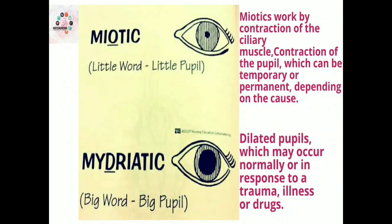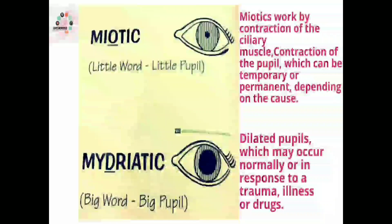Next we have miotic and mydriatic — two chemical substances. Miotic means little pupil; it works by contraction of the ciliary muscle and contraction of the pupil, which can be temporary or permanent depending on the cause. Mydriatic, also called big pupil, means dilated pupils, which may occur normally or in response to trauma, illness, or drugs.